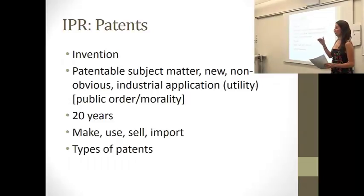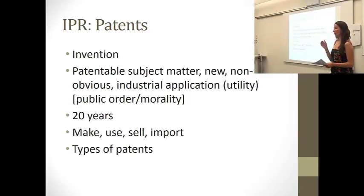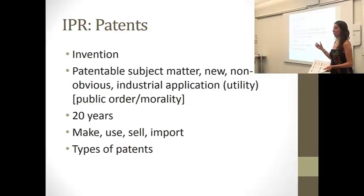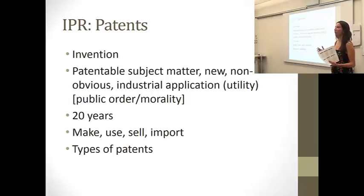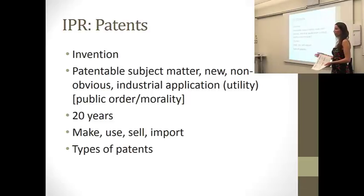Under the PCT, if you file your application on April 1st, you have 12 months to file in any of the designated countries. Even if you apply in Australia on December 1st, you're still considered to have applied on April 1st. This gives you priority in filing, which is important so that no one in Australia can claim they invented it first. Your 20-year term starts from that original filing date.